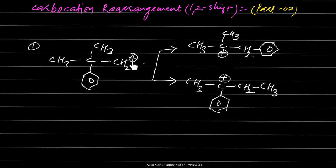In this example, we have a carbocation group and we have a phenyl ring. This means there are two types of shifts possible.